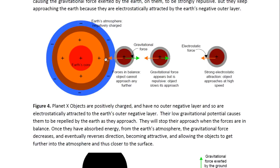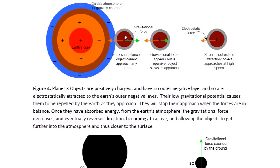As they approach the Earth, suddenly there will be a gravitational interaction between the two, but it will be repulsive because they are so low in gravitational potential. As long as this electrostatic force is stronger than that gravitational repulsion, the object will keep approaching. It will stop when the two forces are in balance — in other words, they have the same magnitude. By which time the object will most likely be touching the Earth's atmosphere and will thus be able to absorb energy. As the objects gain gravitational energy by absorbing energy from the Earth, they will be able to approach closer and closer because the repulsive gravitational force will decrease in size, until eventually it reverses and becomes attractive.